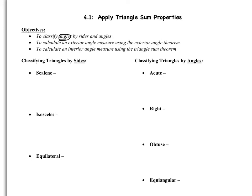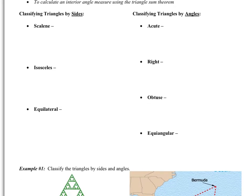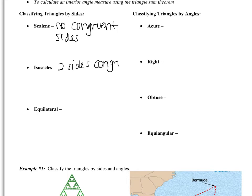The first thing is classifying a triangle. There are two ways to classify: by sides and by angles. There are three different side terms. Scalene refers to triangles that have no congruent sides. Isosceles has two sides that are congruent, and equilateral has all three sides congruent. Isosceles and scalene may be new terms to you.